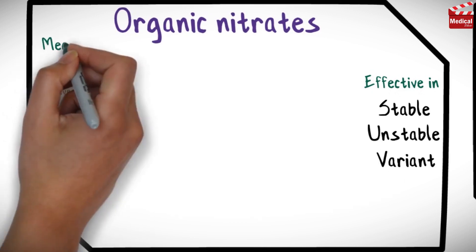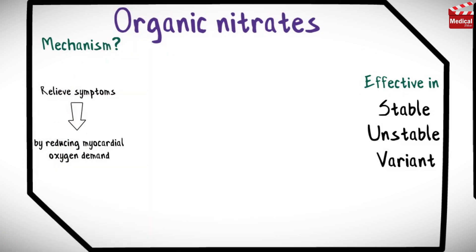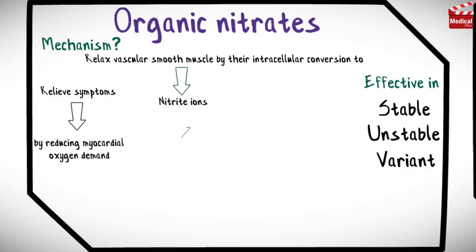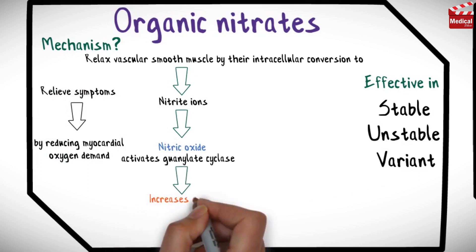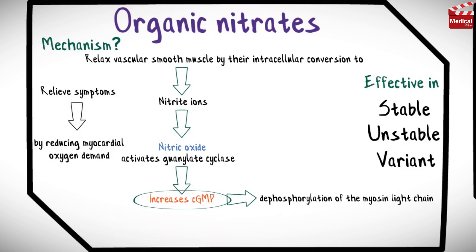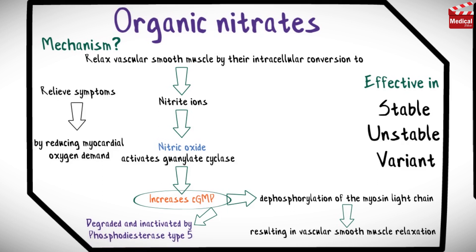The exact mechanism: organic nitrates relax vascular smooth muscle by their intracellular conversion to nitrite ions, then to nitric oxide, which activates guanylate cyclase and increases the cell's cyclic guanosine monophosphate (cGMP). Elevated cGMP causes the phosphorylation of the myosin light chain, resulting in vascular smooth muscle relaxation.